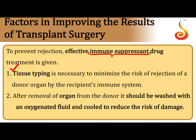After removing the organ, it needs to be washed with an oxygenated fluid to avoid damage to the tissue. Once removed from the body, there is no direct blood supply to the organ, so there may be oxygen deficiency and the tissues might die. To prevent that, it must be washed with an oxygenated fluid and cooled, as cooling is good for preserving tissue. This reduces the risk of damage to the organ until it can be sutured into the recipient's body.